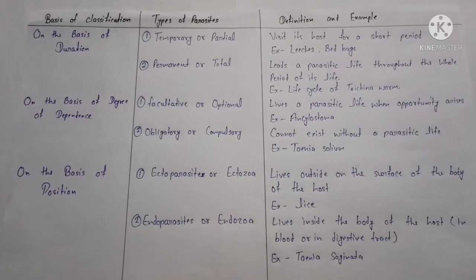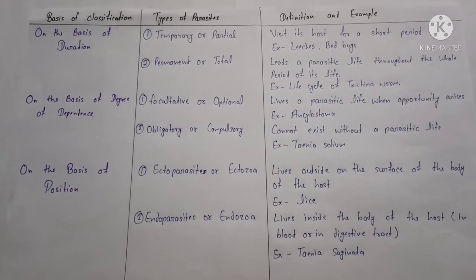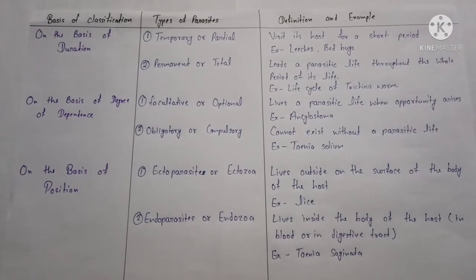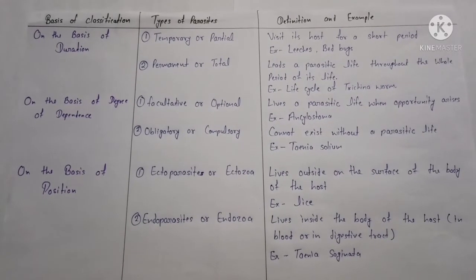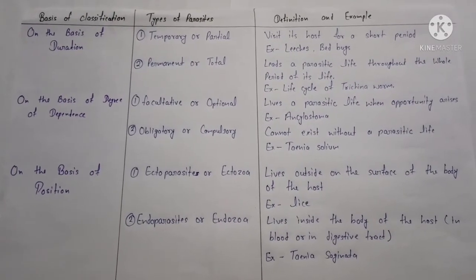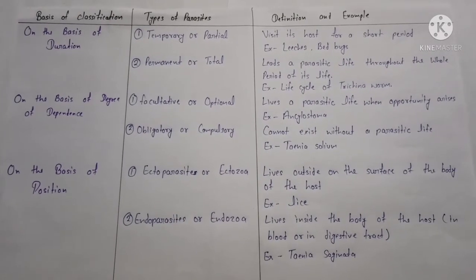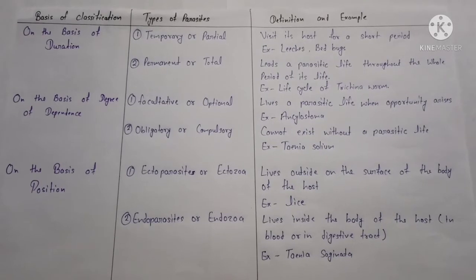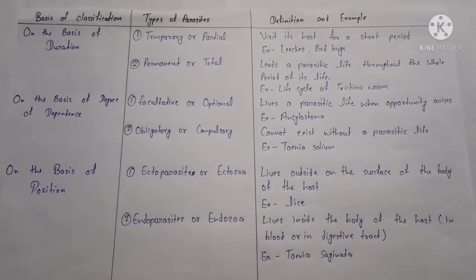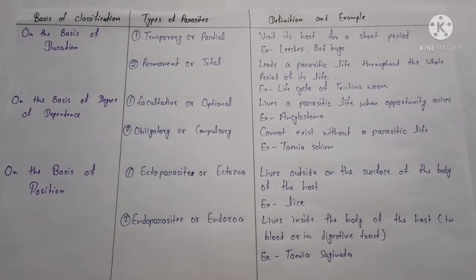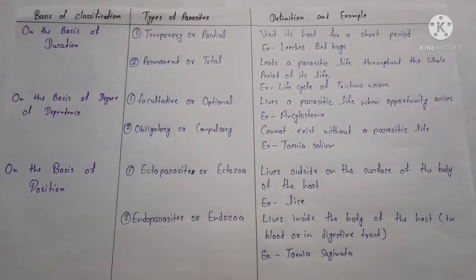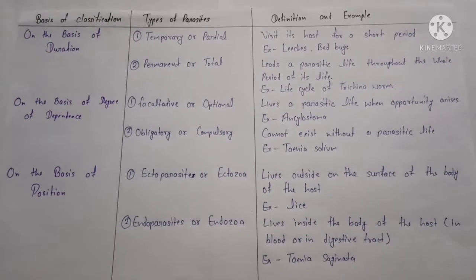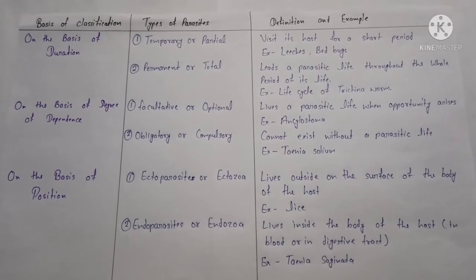Second, on the basis of degree of dependence, there are two types: facultative parasite and obligatory parasite. A facultative or optional parasite lives a parasitic life only when the opportunity arises. Example: Ankylostoma. A compulsory parasite cannot exist without a parasitic life cycle. Example: Taenia solium.